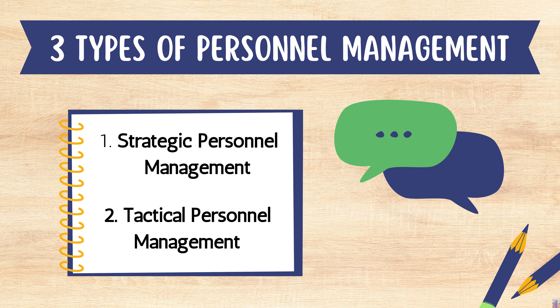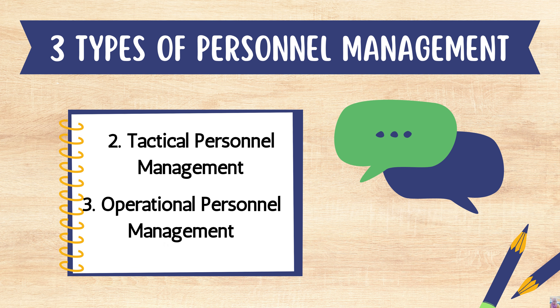Now I will go to the three types of personnel management. Number one is strategic personnel management — it focuses on an organization's current and future staffing needs. Number two is tactical personnel management — it involves developing HR resources and using them to plan staffing processes. Number three is operational personnel management — it focuses on maintaining HR support functions.